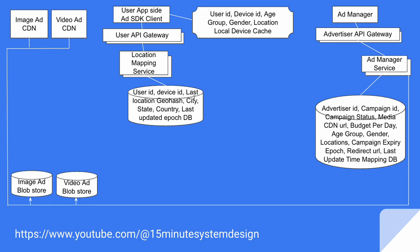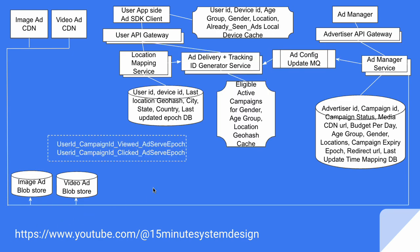This location data is stored in the location DB pool. Now every time an ad campaign gets updated, the ad manager service publishes an event in the ad campaign update message queue, which gets consumed by the ad delivery service. The ad delivery service maintains a reverse mapping of all eligible active campaigns for gender, age group, and location geo hashes in the cache.